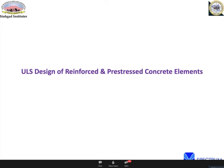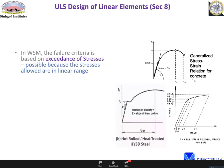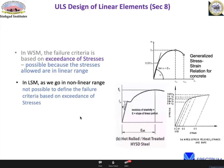Section 8 covers the ultimate limit state design of reinforced and prestressed concrete elements. Earlier, there were two separate codes for RC and prestressed concrete; now it is a unified code. A major difference between working stress method and limit state method is the failure criterion: in working stress, a stress limit defines failure (e.g., concrete or steel reaching a specified stress). In limit state with non-linear behavior, you cannot use stress as a failure criterion — you must use strain as the failure criterion.